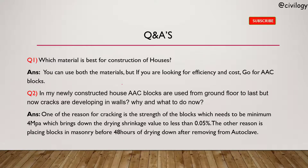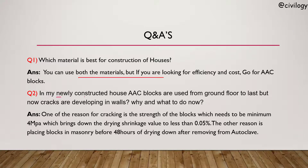Which material is best for construction? You can use both materials, but if you are looking for efficiency and cost, go for AAC blocks. For a manually constructed house where AAC blocks were used from the ground floor to the last floor and cracks are developing in the walls: one reason is block strength must be a minimum of 4 MPa. Another reason may be placing blocks in masonry before 48 hours of drying after removing from the autoclave. The remedy is to fill the gaps with grout or cement after total shrinkage.